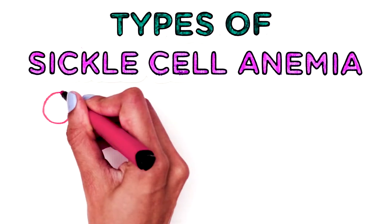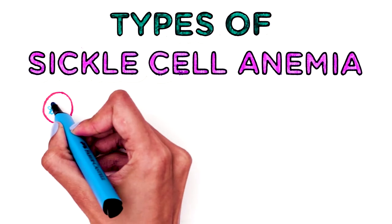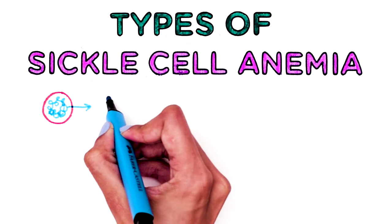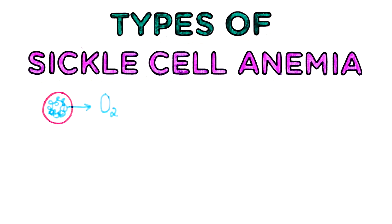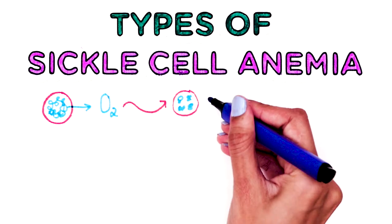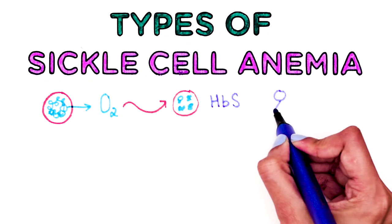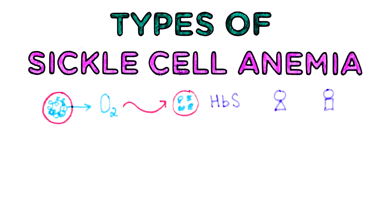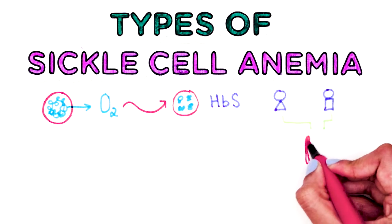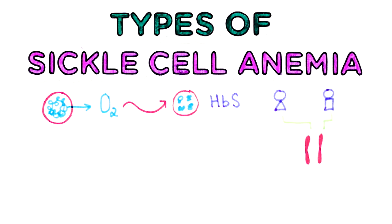Hemoglobin is a protein in red blood cells that carries oxygen throughout the body. People who have sickle cell disease have abnormal hemoglobin in their red blood cells, where they inherit two abnormal hemoglobin genes, one from each parent.